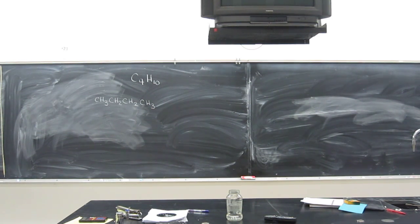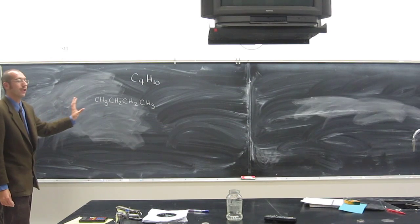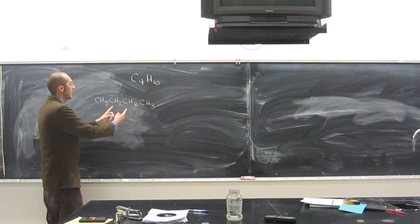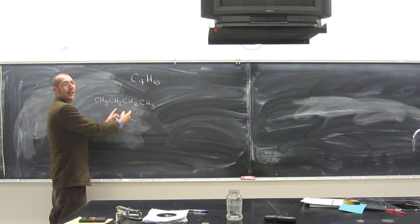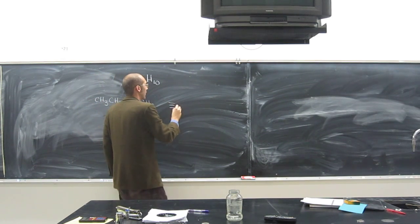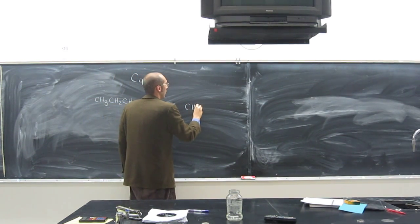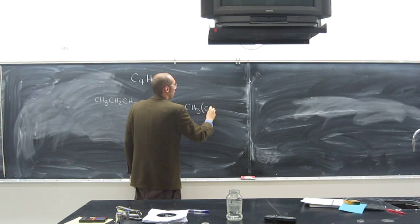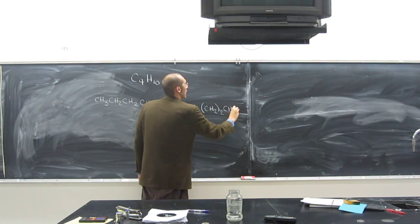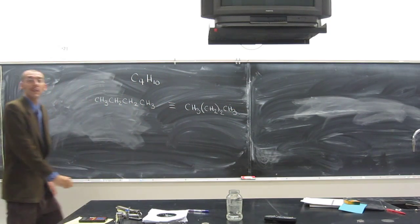It's called the condensed structural formula. You can even condense this even more if you wanted to. Because you see that these two CH2s are the same, so it's a repeat of that. So this is the same thing as CH3, CH2 subscript 2, CH3 if you want to be real convinced about it.